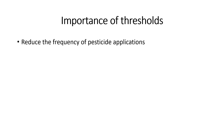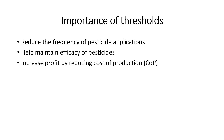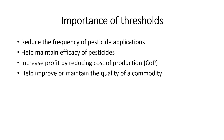Economic Threshold is the basis of integrated pest management recommendations in crop production. Importance of Thresholds: They reduce the frequency of pesticide applications through need-based application rather than calendar or routine-based spray, promoting rational use of pesticides. They help maintain efficacy of pesticides — by being more rational about pesticide use, the development of resistance in the pest can be avoided. They also increase profit by reducing cost of production and help improve or maintain the quality of a commodity.